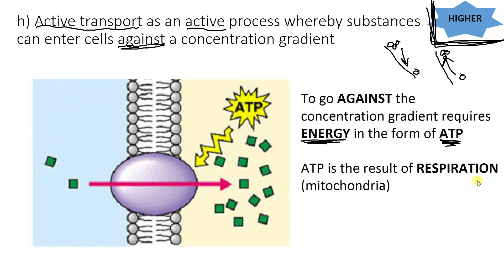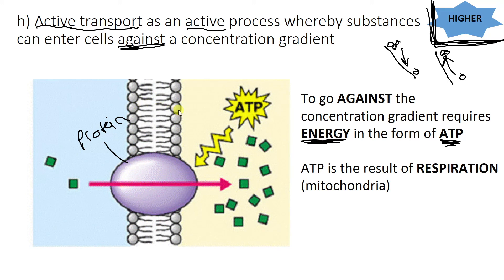ATP is the result of respiration. We don't just release energy from the mitochondria freely — we kick it out in the form of a molecule, and that's what comes and binds to the membrane. You usually have things like a protein in the membrane. These molecules go into the cell against the concentration gradient, because there's more on one side than the other. It goes through a dedicated area in the membrane, and this is where your energy provides the force to move it.